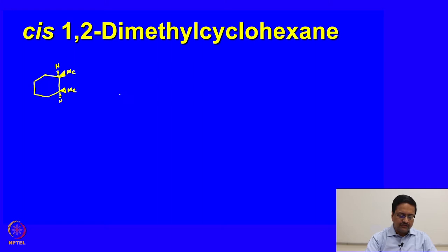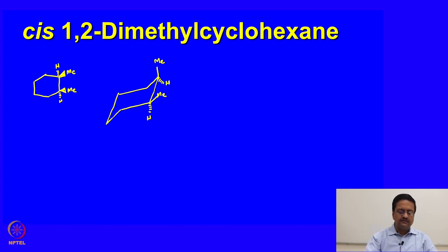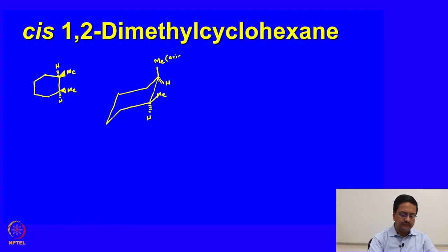If we try to draw cyclohexane in chair form, we should draw this 1,2-dimethyl in this fashion. This methyl group here should be up and the other methyl group on that carbon also should be up. The hydrogen is down here and the hydrogen is down there. This is the conformation of cis-1,2-dimethylcyclohexane, where this methyl group is axial and this one is equatorial.